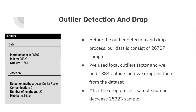Before the outlier detection and drop process, our data consists of nearly 27,000 samples. We used local outlier factor and found 1,384 outliers and dropped them from the dataset. After the drop process, the sample number decreased to 25,000 samples.